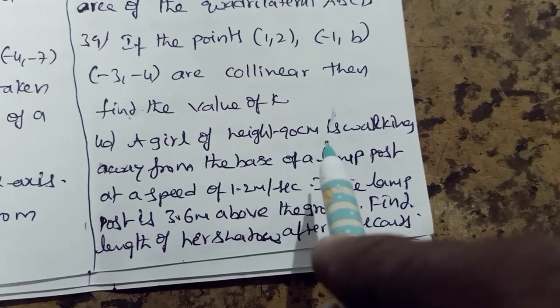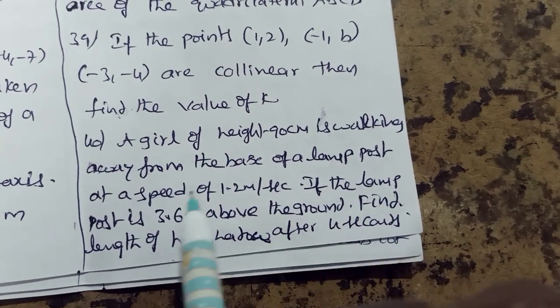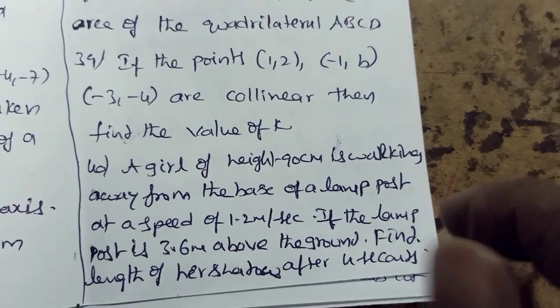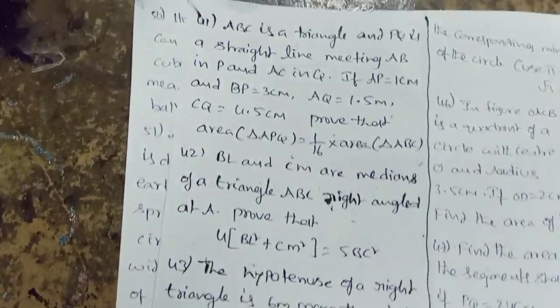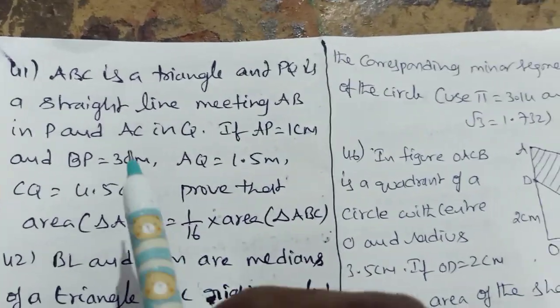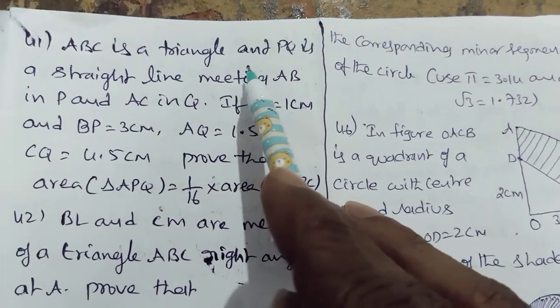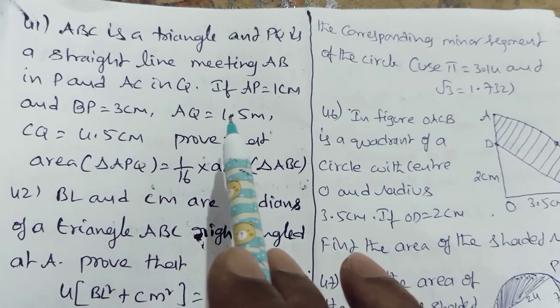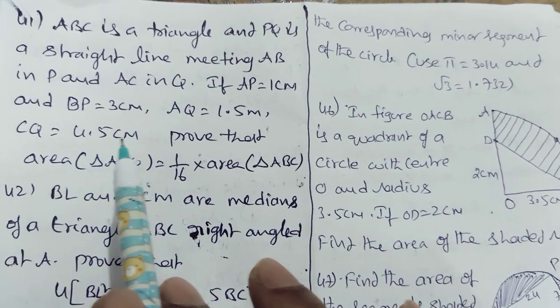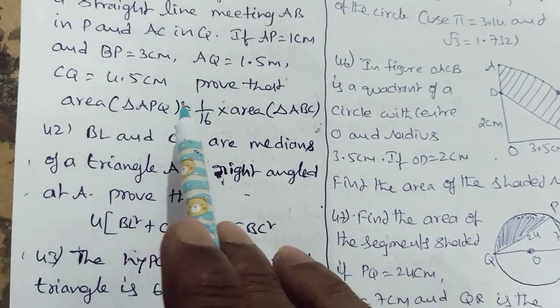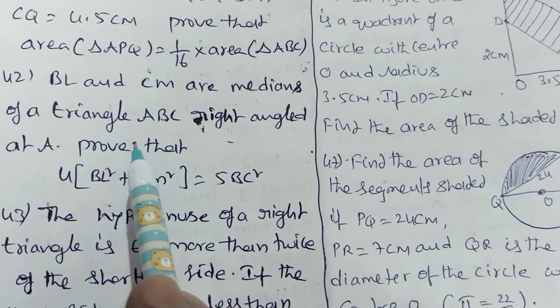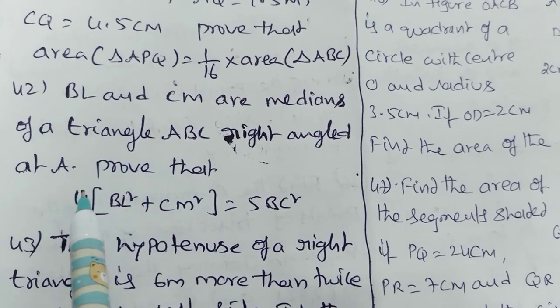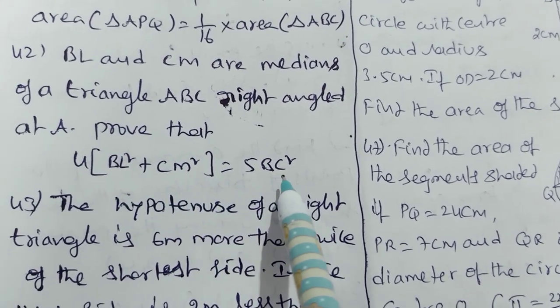Similar triangles. A girl of height 90 cm is walking away from the base of a lamp post at a speed of 1.2 m per second. If the lamp post is 3.6 m above the ground, find the length of her shadow after 4 seconds. Triangle ABC and PQ is a straight line meeting AB in P and AC in Q. AP equal to 1 cm, BP equal to 3 cm, AQ equal to 1.5 cm, CQ equal to 4.5 cm. Prove that area of triangle APQ equal to 1 by 16 into area of triangle ABC.